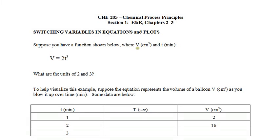So here we're looking at switching variables in equations and plots. Now suppose we have a function shown below where volume is in centimeters cubed and time t is in minutes. So the question is what are the units on 2, the coefficient 2, and exponent 3?